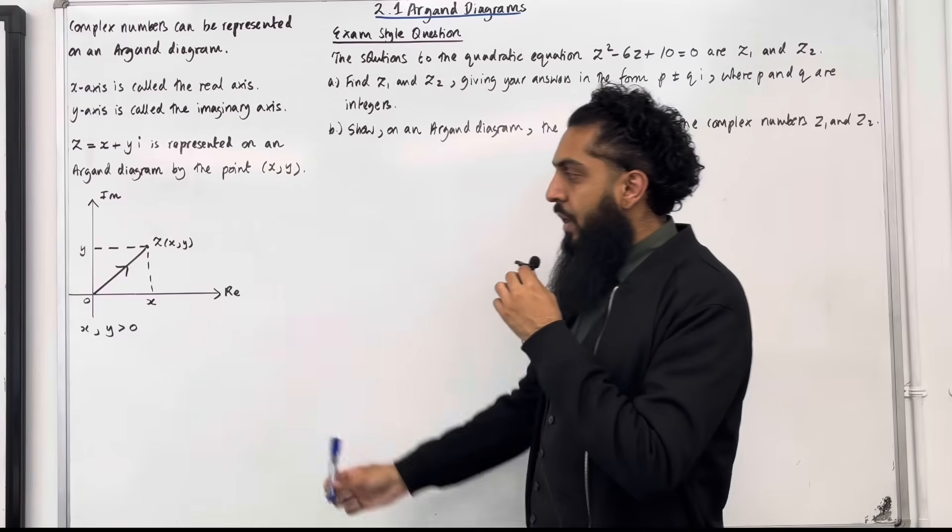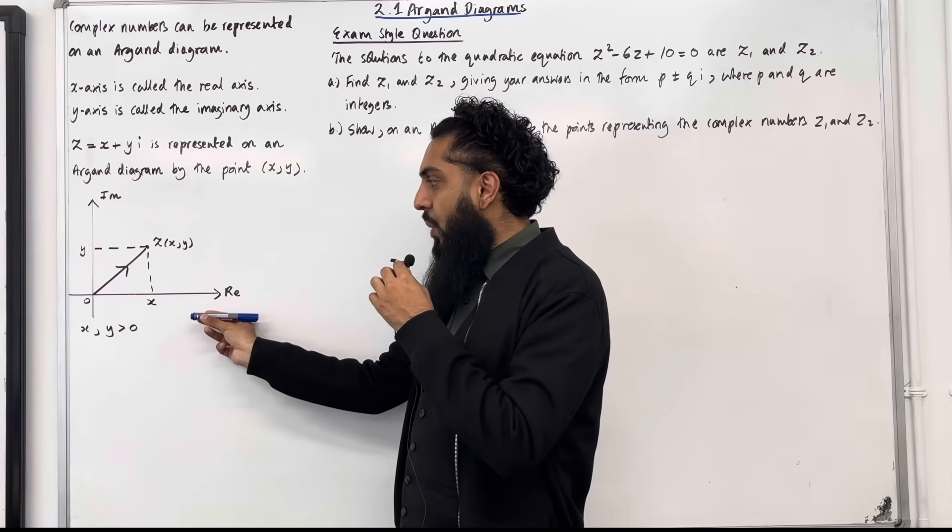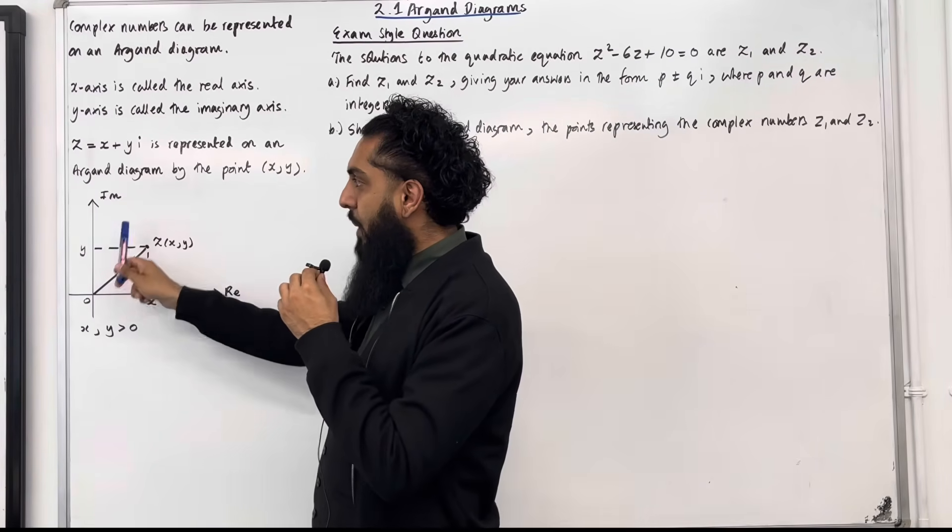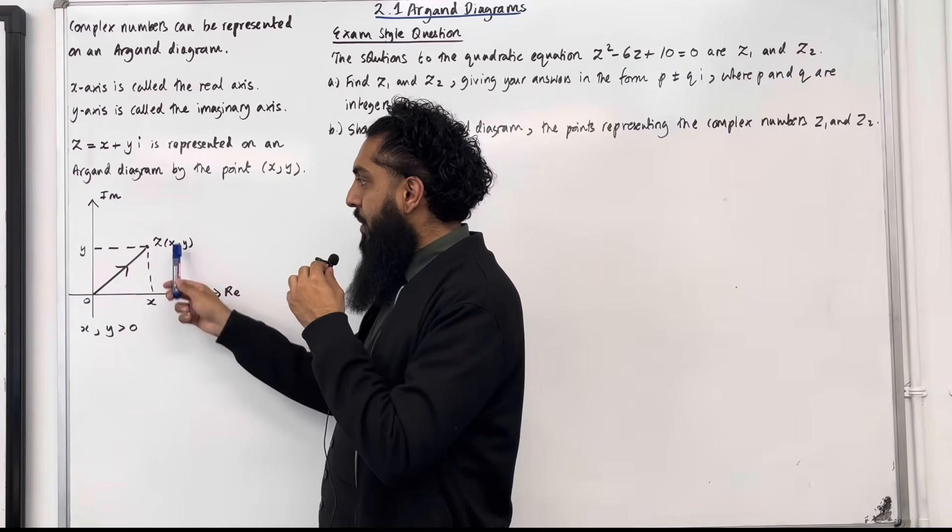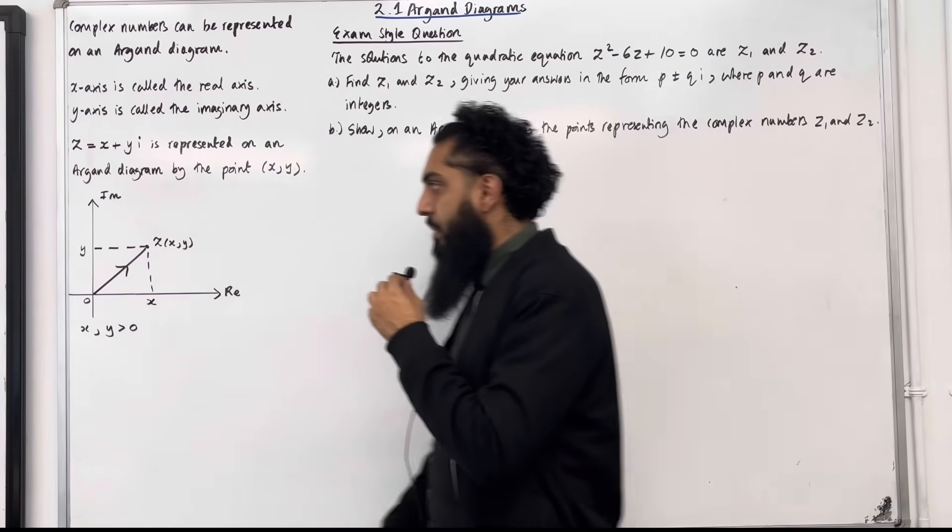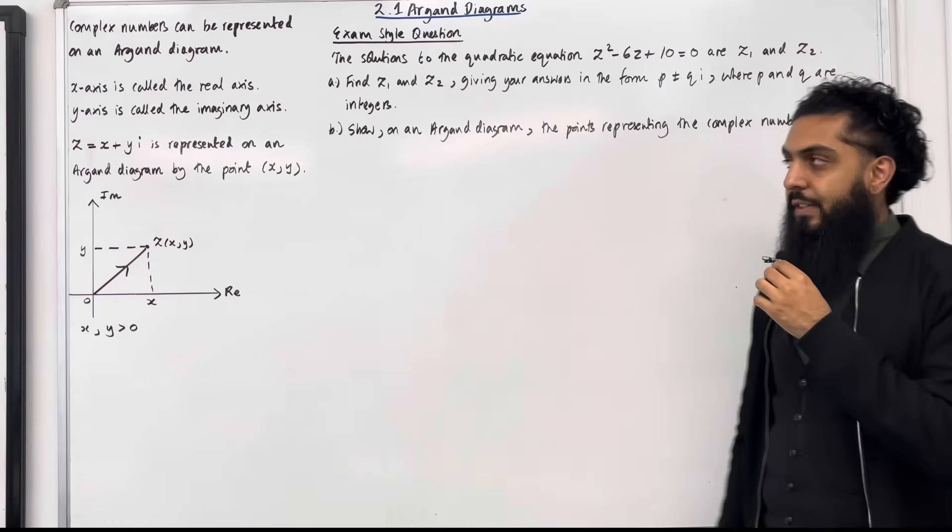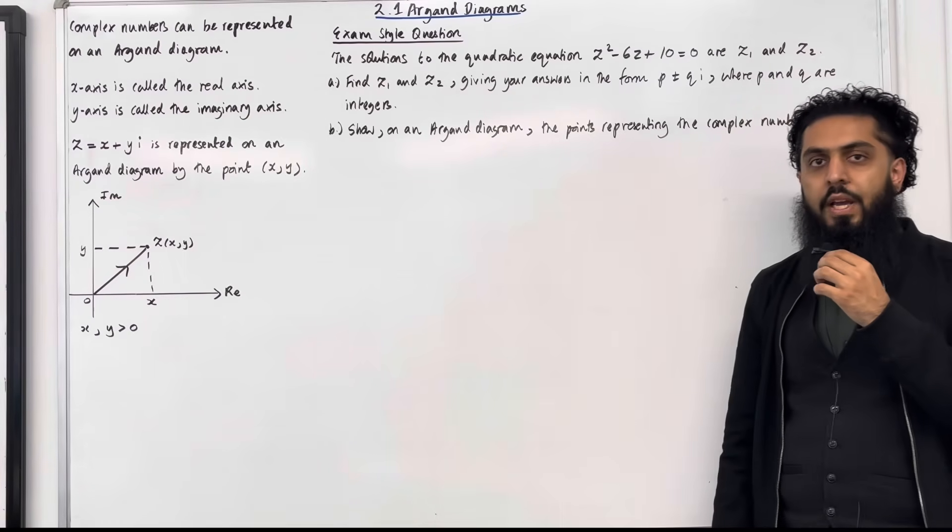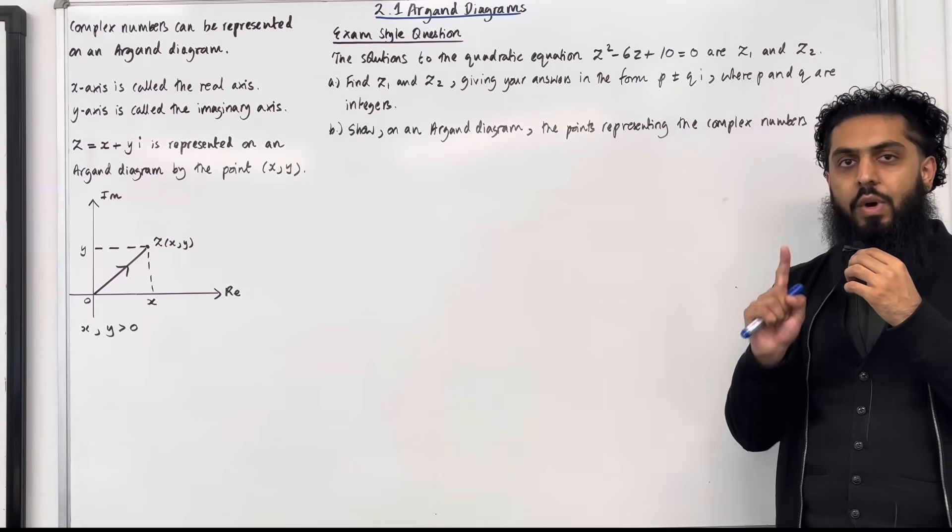Here is my Argand diagram. The horizontal axis represents the real axis and the vertical axis represents the imaginary axis. Here is the point (x, y) representing the complex number z. These are the key facts of 2.1 Argand diagrams. I'll be implementing these key facts within one exam style question.